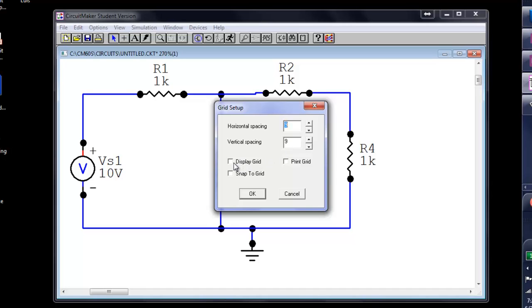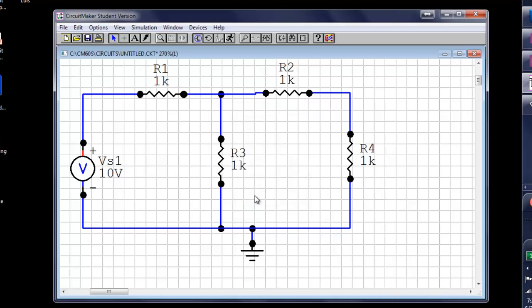Then, in this pop-up dialog, I activate Display Grid and Snap to Grid. This time, when I set an element, it will snap to the grid automatically, which will make the assembling much easier.